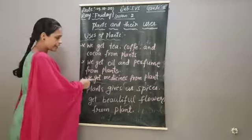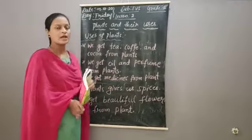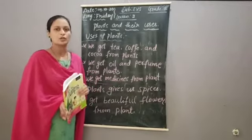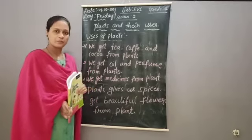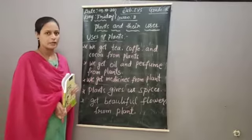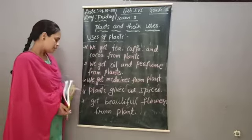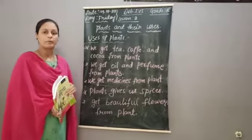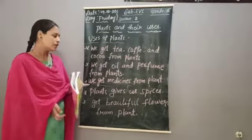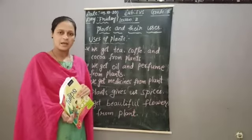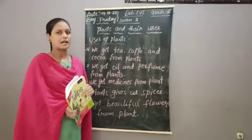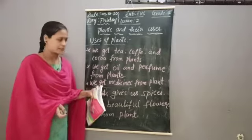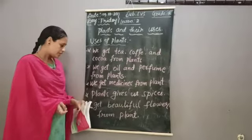We get medicines from plants. Medicinal plants include tulsi, mint, and aloe vera. Plants also give us spices. Your mother uses spices like cardamom, clove (lavanga), and cinnamon when preparing food to make it tasty.